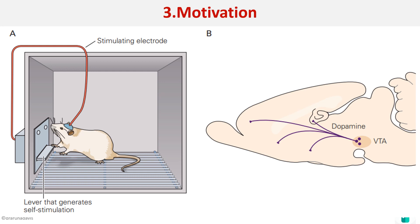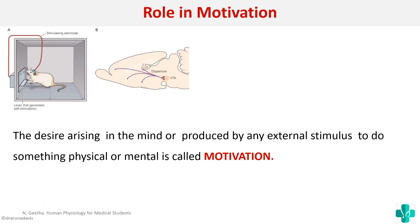The next function is motivation. In an experimental setup, a rat was given a lever that would stimulate a specific area in the brain — the ventral tegmental area. Scientists found that when the electrode was at the ventral tegmental area, the rat continuously kept pressing that lever. This showed that there is an area that acts like a reward center, motivating the rat. Motivation is defined as a desire arising in the mind or produced by an external stimulus to do something specific.